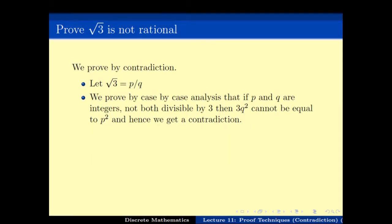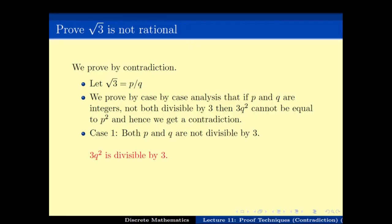Case 1: both p and q are not divisible by 3. Then 3q² is of course divisible by 3, but p² is not divisible by 3 because p is not divisible by 3. So if p² is not divisible by 3 but 3q² is divisible by 3, then p² cannot equal 3q². So 3q² cannot equal p² in Case 1.